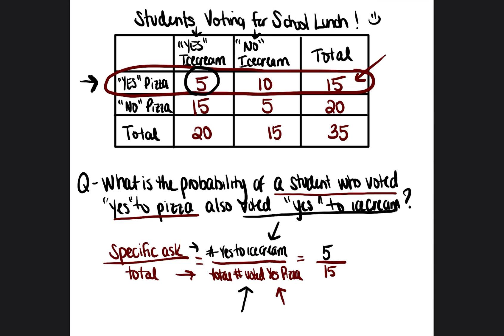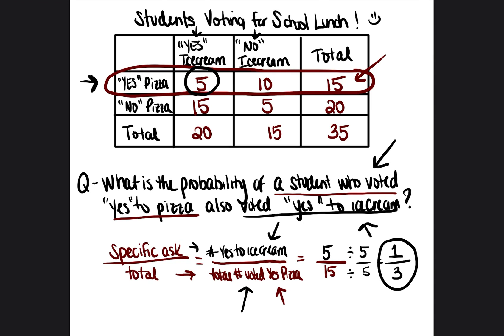We have 5 over 15, and we're going to reduce the fraction by dividing the top and bottom by the greatest common factor, which is 5. Five divided by 5 is 1, and 15 divided by 5 is 3. So our answer is one-third. The probability of a student who voted yes to pizza and also voted yes to ice cream is 1 out of 3, or 33%. If you need help changing fractions to percentages, check the link to my Accuplacer Arithmetic Workbook in the description.